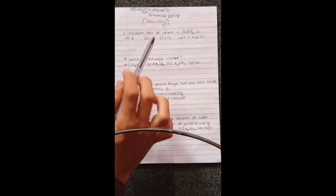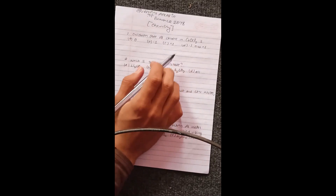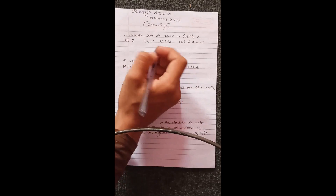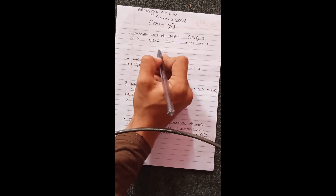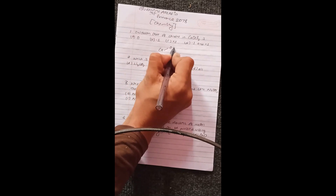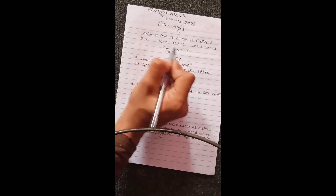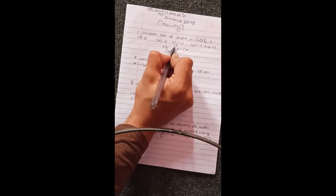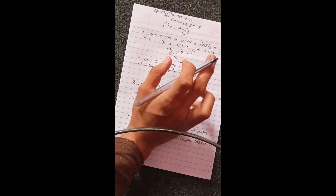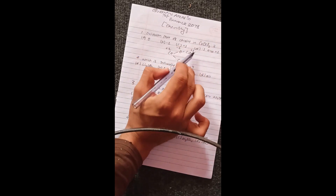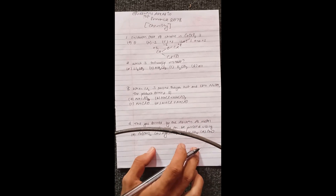Question number one. The oxidation of chlorine in CaOCl2, bleaching powder. In CaOCl, Ca is +2, O is -2, and the two chlorines are -1 and +1. So the chlorine oxidation numbers are +1 and -1. Option D is correct.